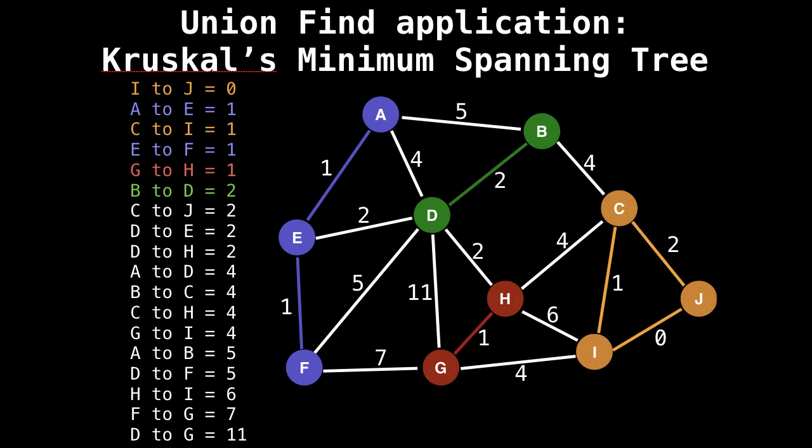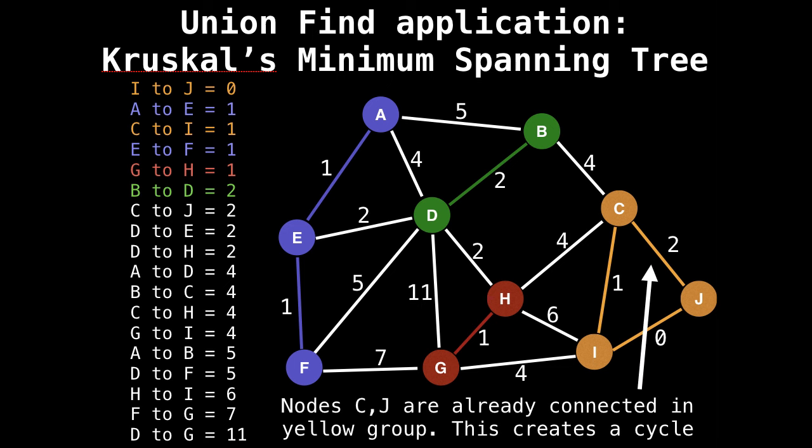Now we're trying to connect C to J. But notice that C and J already both belong to group orange. So we don't want to include that edge because it's going to create a cycle. So ignore it.